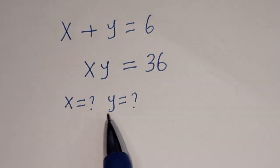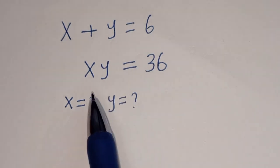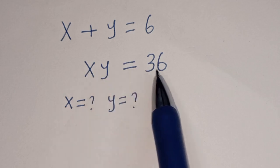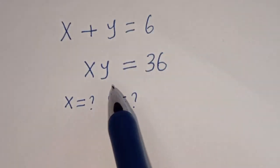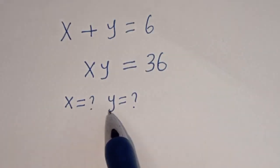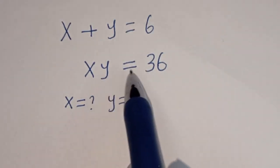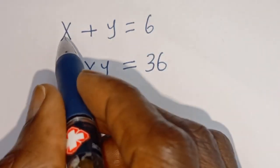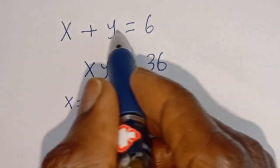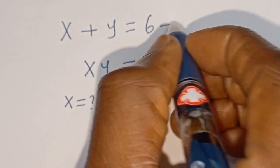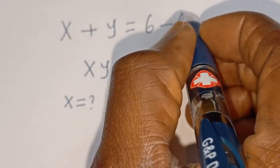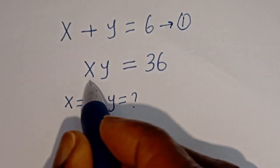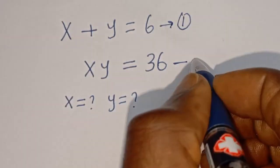Hello, how to solve for s and y in this problem: s plus y is equal to 6, and x y is equal to — we want to find the value of s and y. Please don't forget to like, share, comment and subscribe to my channel. Here s plus y is equal to 6, let's call this equation 1, and x y is equal to 36, let's call this equation 2.